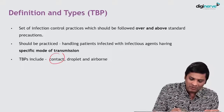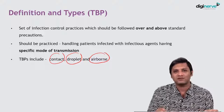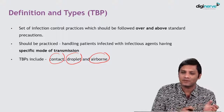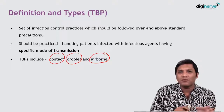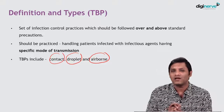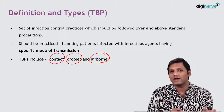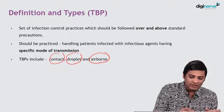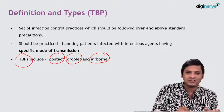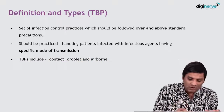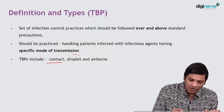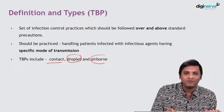There are three modes of transmission discussed in the previous session: contact transmission, droplet transmission, and airborne transmission. Infectious agents in hospitals are transmitted majorly by these three modes. Therefore, transmission-based precautions are also classified into three types: contact precautions, droplet precautions, and airborne precautions. Let us discuss all of these one by one.